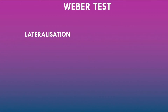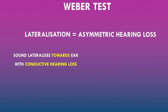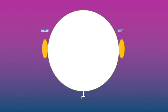If there is lateralization — the patient heard the sound louder in a particular ear — this indicates asymmetric hearing loss. The direction of lateralization helps determine the type: sound lateralizes towards the ear with conductive hearing loss, and sound lateralizes away from the ear with sensorineural hearing loss. This is very important to remember.